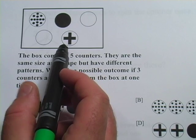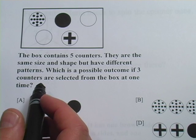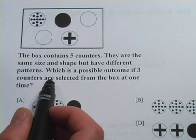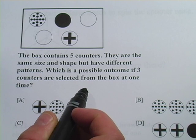There's two white ones, a black one, one with a plus on it, and a polka dot one. It says they are the same size and shape but have different patterns. Which is a possible outcome if three counters are selected from the box at one time?